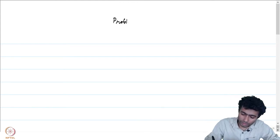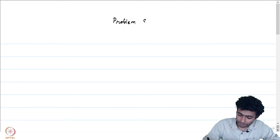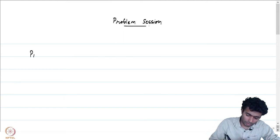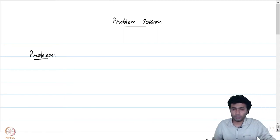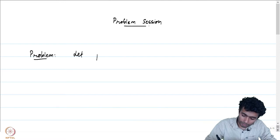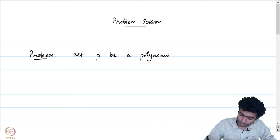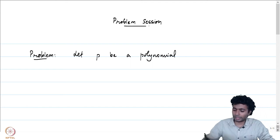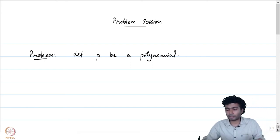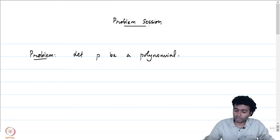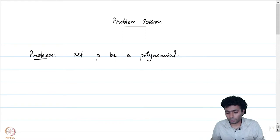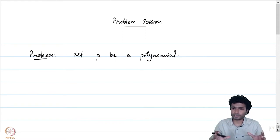The first problem is regarding the winding number. Let us start off with some polynomial p. Let p be a polynomial, and by the fundamental theorem of algebra, we know that this polynomial splits and we know exactly what the roots are.